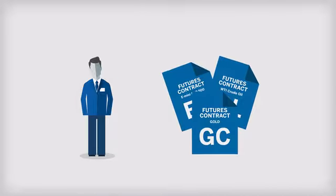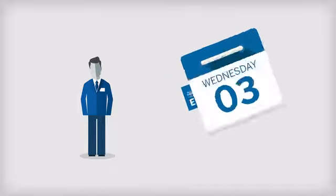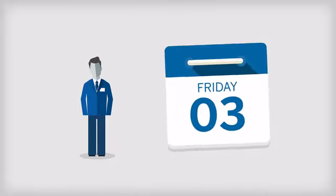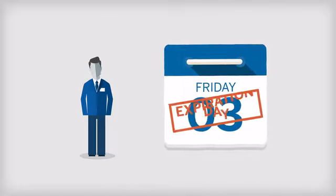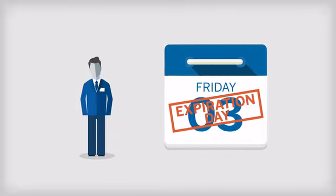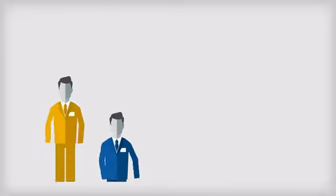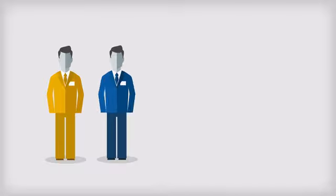A contract's expiration date is the last day that a trader can trade that contract. This can occur on the third Friday of the expiration month, but varies by contract. Prior to expiration, a futures trader has three options.